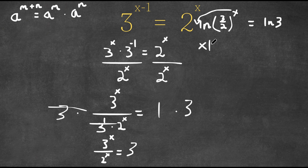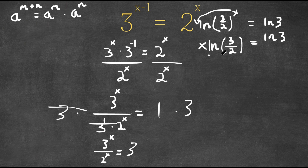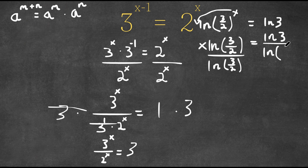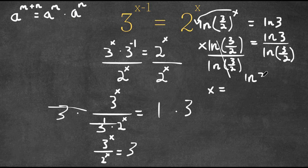So now we have x times ln(3/2) is equal to ln 3. Now I'm actually going to divide both sides by ln(3/2) so I can isolate x. These two cancel out and we're left with x is equal to ln 3 over ln(3/2).